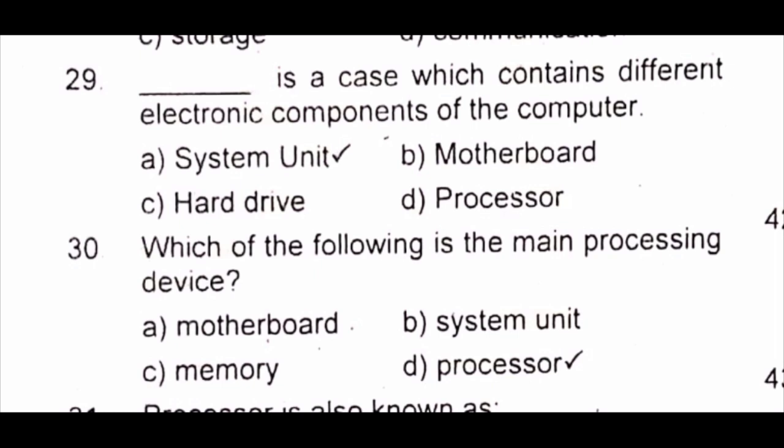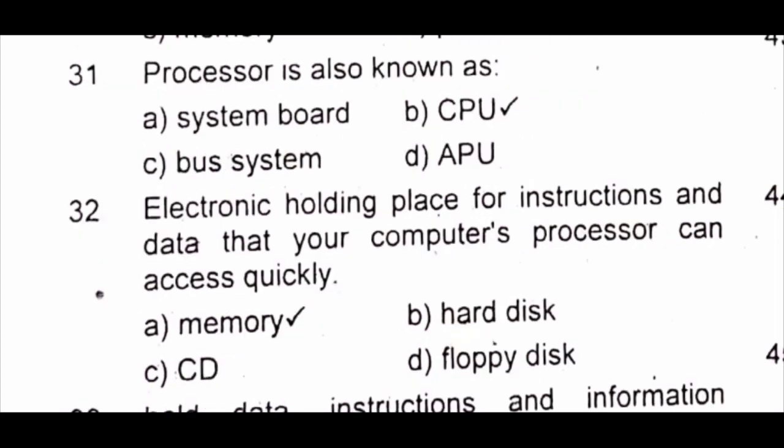Question 30: Which of the following is the main processing device? A) motherboard B) system unit C) memory D) processor. The answer is D) processor. Question 31: Processor is also known as A) system board B) CPU.